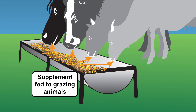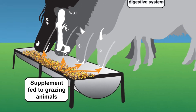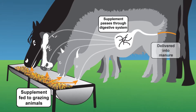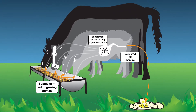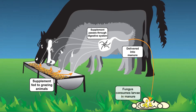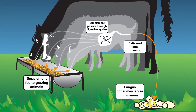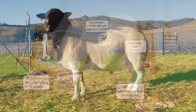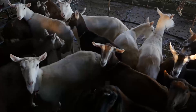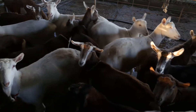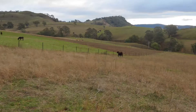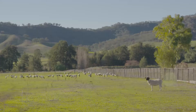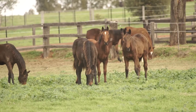Duddingtonia flagrans is fed to grazing animals. The thick-walled spores remain inert, having no effect within the host animal, resisting digestion and passing through into the manure. There they germinate and form trapping organs that capture, paralyze and consume emerging infective worm larvae, including multi-resistant larvae. The crucial reinfestation stage of the parasite's life cycle is interrupted, reducing the amount of reinfection from contaminated pasture. This interruption of the life cycle significantly reduces parasitic nematodes on pasture.